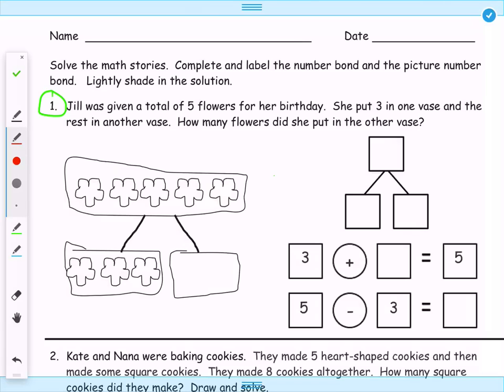So this is problem set 30 from module 1. We're going to be solving some math stories. Jill was given a total of 5 flowers for her birthday. She put 3 in one vase and the rest in another vase. How many flowers did she put in the other vase?